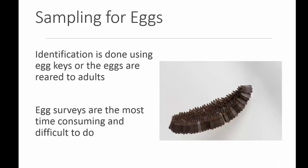When sampling for eggs, identification is usually done using egg keys, or the eggs can be reared to either larvae or adults. While egg sampling is by far the most accurate, it's the most time-consuming and difficult type of survey to do.